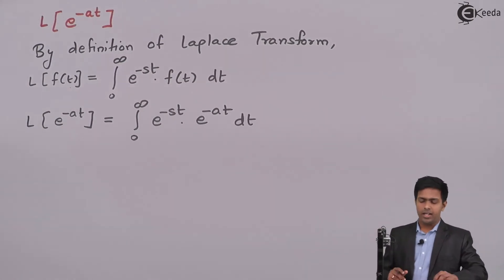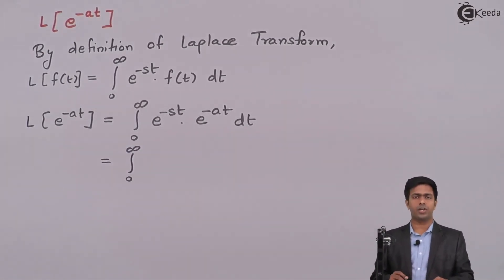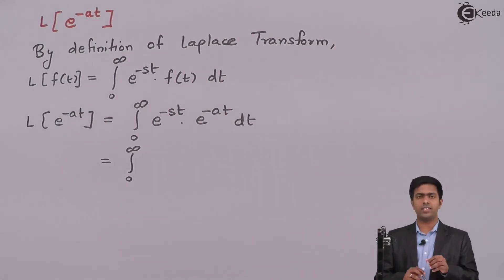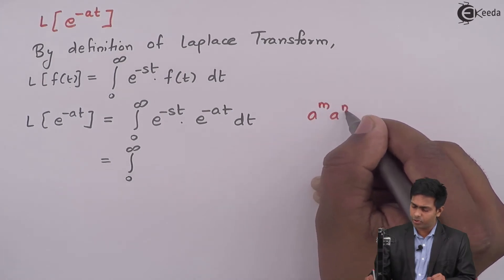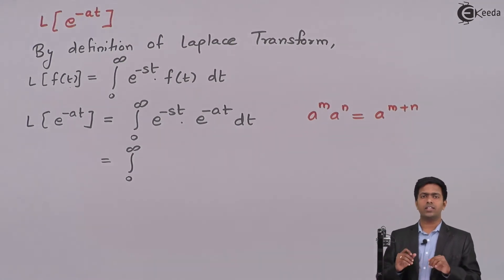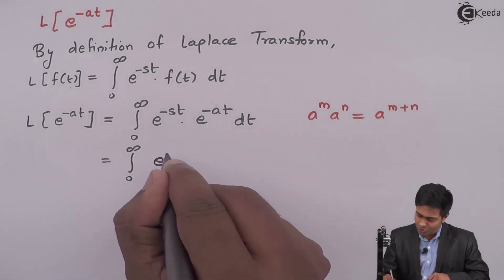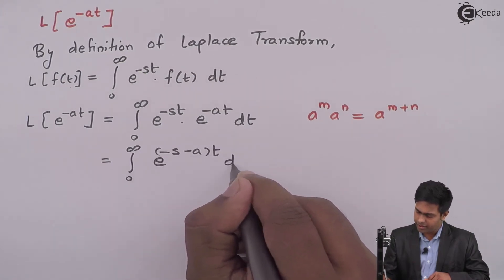Now let us find out the integration with respect to t. For that, first of all, we will multiply these two exponential terms. These two terms have the same base, so whenever we have the same base with different exponents, we add the exponents by using the property a raised to m into a raised to n equals a raised to m plus n. By using this law of indices, we will get e raised to minus s minus a into t, dt.